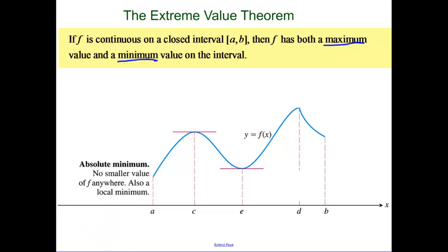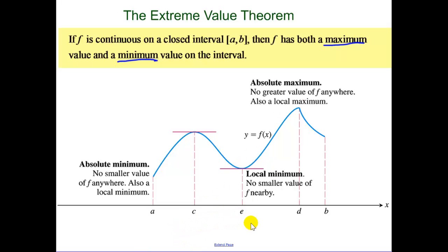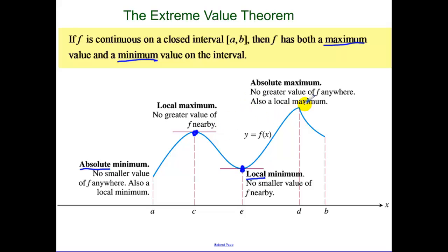Here at A, we have an absolute minimum. At D, we're going to have an absolute maximum. At E, we're going to have a local minimum — meaning in relation to the points around it, I'm at a minimum value, but it's not as small as our absolute minimum. And up here, that's a local maximum — in relation to the points around it, it's the highest point, but not as high as our absolute maximum. And lastly, we have another local minimum. You can have more than one local minimum, but you can only have one absolute max and one absolute min.